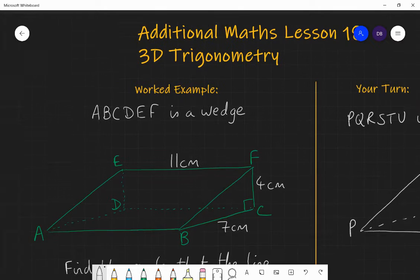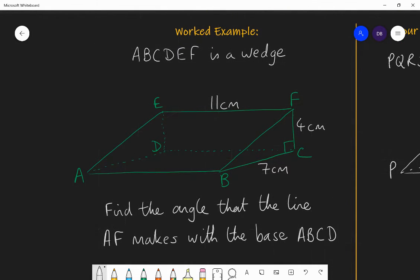So let's look at this question here. We have a wedge shape. This green object here, ABCDEF, is a wedge. It's made of two right-angled triangles at the ends, so the cross-section throughout is a right-angled triangle, and its base is a rectangle.